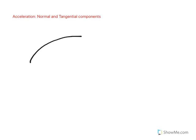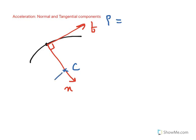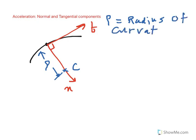If you have a particle traveling along a curved path, the tangential axis at any instant is tangent to the path — that is the t-axis. The normal axis is perpendicular, meaning 90 degrees, to the tangential axis, and the positive normal direction always points inside the curve toward the center of curvature. The center of curvature lies along the normal axis, and the radius of curvature is denoted by rho.